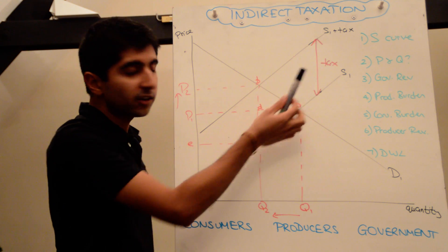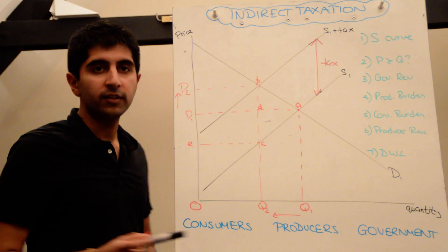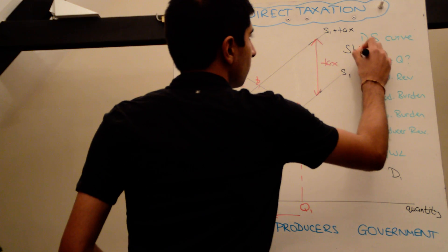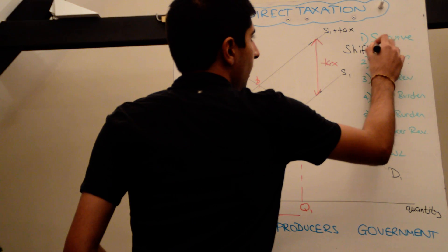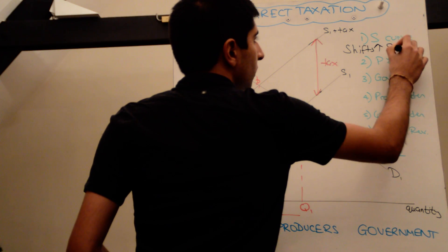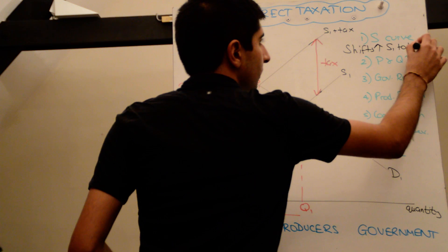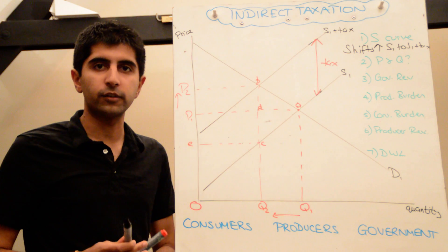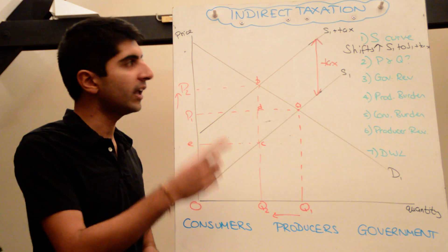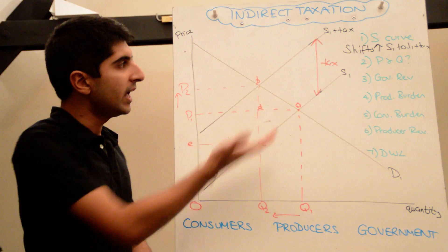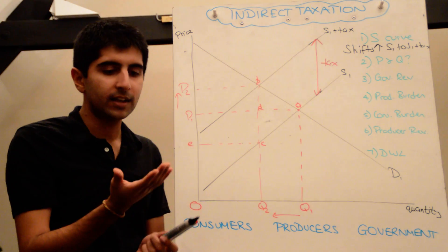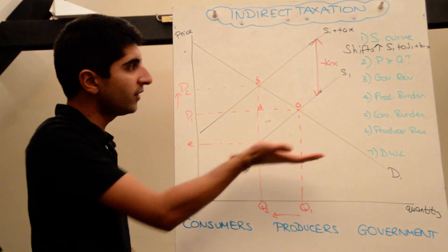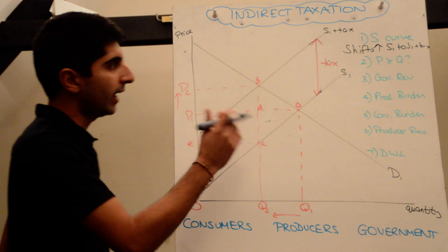The tax shifts the supply curve upwards from S1 to S1 plus tax. The reason it shifts up is because there is an increase in the cost of production. Do not say it shifts left, that's incorrect. It shifts upwards. The upward distance, the vertical distance, is the value of the tax.